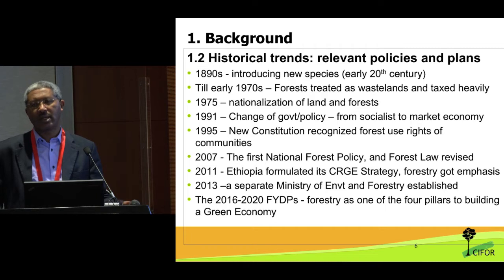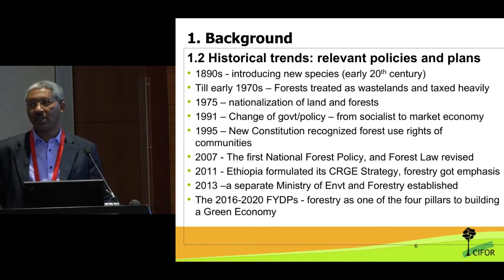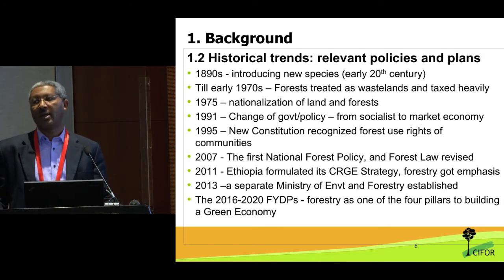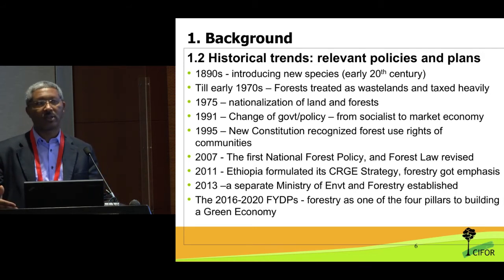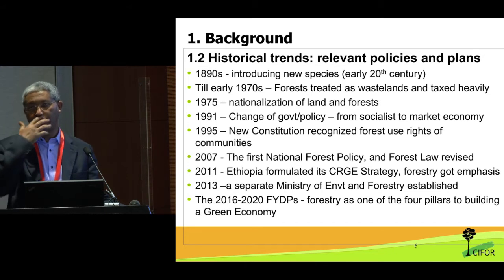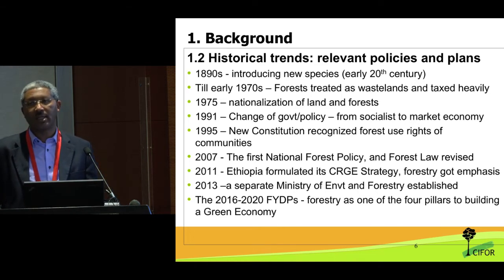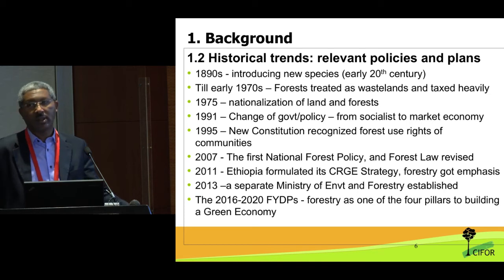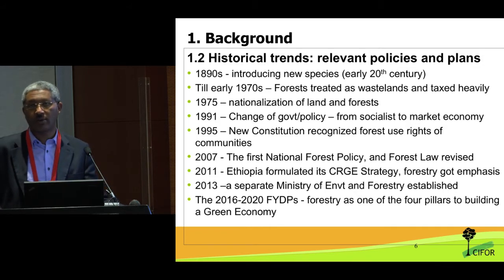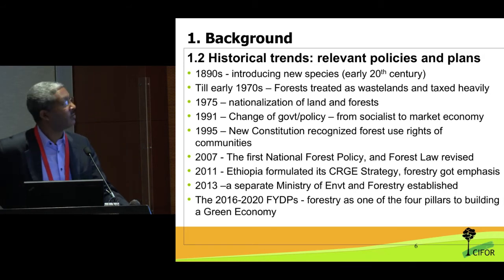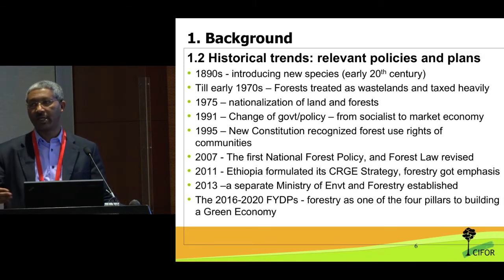As an ancient country dependent on agriculture, land degradation was present for centuries. An attempt was made in the 1890s to introduce eucalyptus from Australia. Up until the 1970s the country operated under a feudal system where forests were designated in the land use system as waste lands — if you had wasteland you paid more taxes, so that was how the active conversion of forests into agriculture was promoted through policy. In 1975, nationalization of lands and forests occurred. Since 1995, a decentralized federal system has been followed, which has huge implications for forest governance.